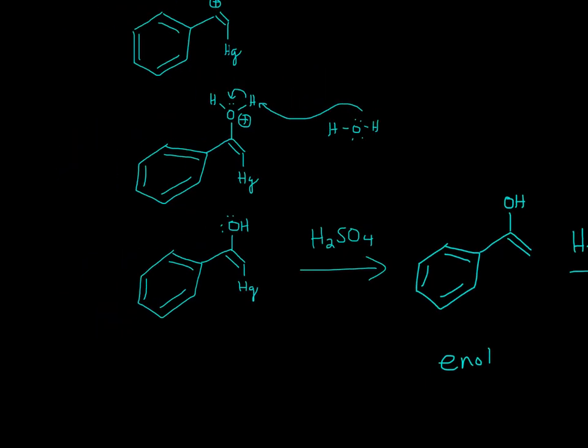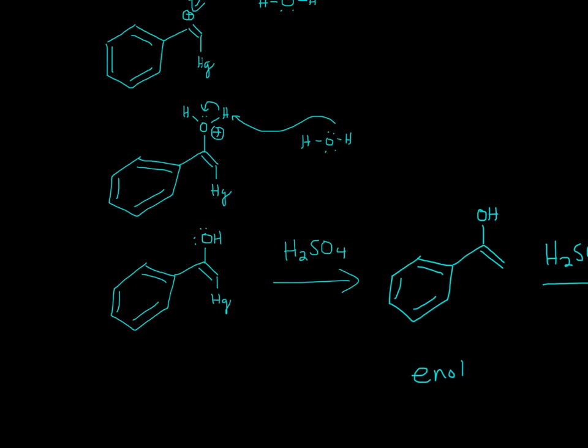Now we're not done because of that H2SO4. H2SO4 will get rid of the mercury. It'll get rid of Hg and we'll be left with this enol, which is an alkene.